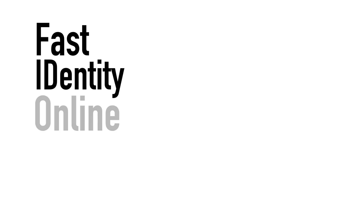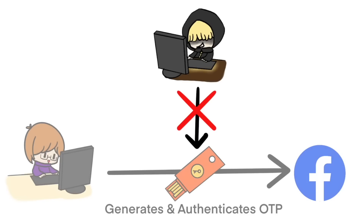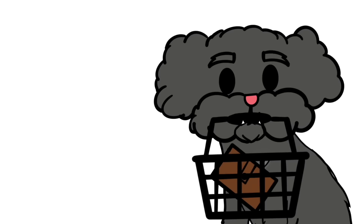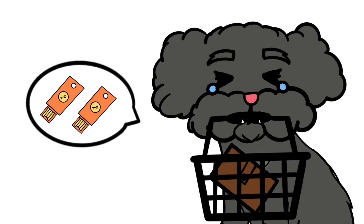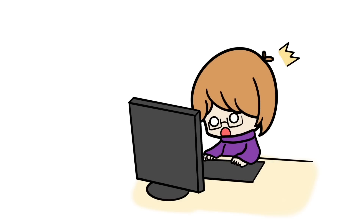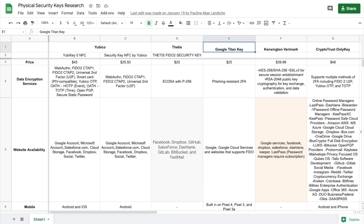An evolution of the hard token are the ones that come baked with Fast Identity Online Universal Second Factor, or FIDO U2F. All the authentication occurs on the key, so there are no one-time passwords that can be intercepted by bad actors. The biggest drawbacks are the possibility of losing the hardware key — which is why a lot of services ask you to buy two, getting very expensive quickly — and also that services actually need to implement the ability to use FIDO U2F.